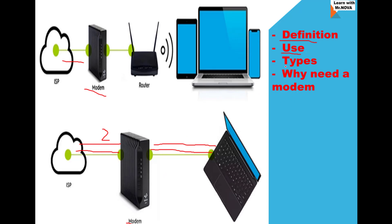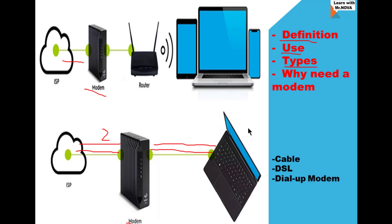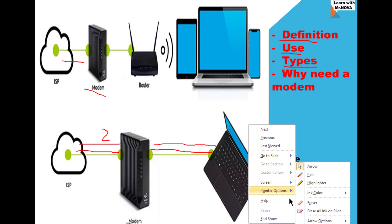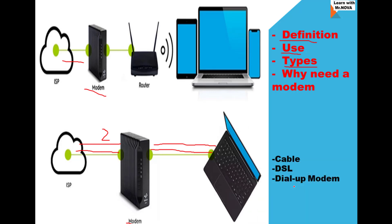Basically there are three types of modem: the cable modem, the Digital Subscriber Line (DSL) modem, and the dial-up modem. These are the three types of modem that exist. Most of these modems require a cable — specifically an ISP cable — that needs to be connected to them.